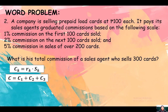Second problem: A company is selling prepaid load cards at 100 pesos each. It pays its sales agent a graduated commission based on the following scale: 1% commission on the first 100 cards sold, 2% commission on the next 100 cards sold, and 5% commission on sales of over 200 cards.